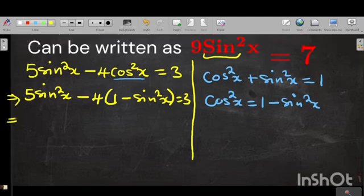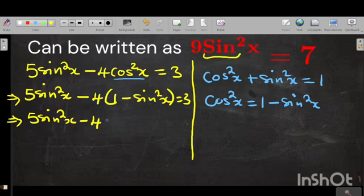Alright, now this means that we are going to have 5 sin squared x. Then negative 4 times 1 will be negative 4. Then negative 4 times negative sin squared x will be positive 4 sin squared x is equal to 3.